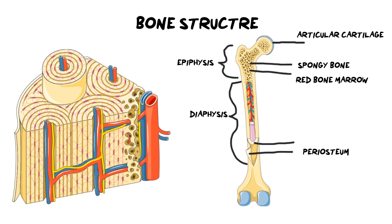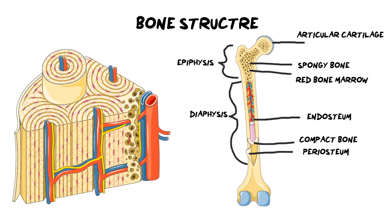The canal sitting in the middle of the bone has an inner lining, and that inner lining is the endosteum. As the name suggests, 'endo' means inside and 'osteum' means bone, just like 'peri' is the outer layer and 'osteum' is bone. Those are the two protective layers.